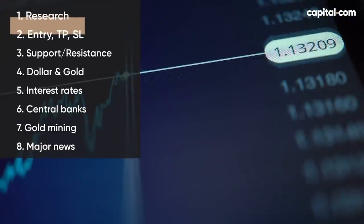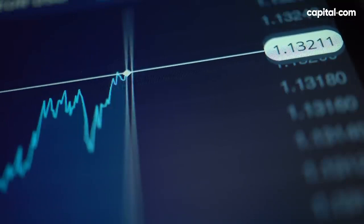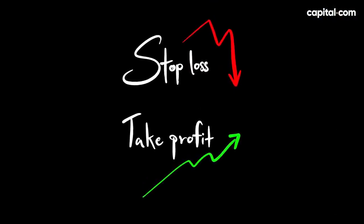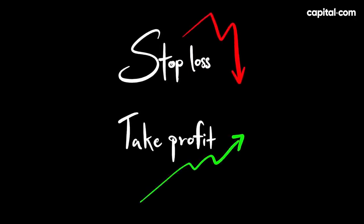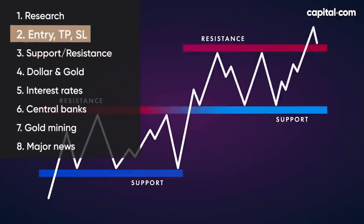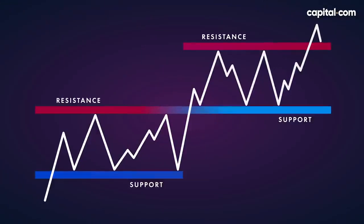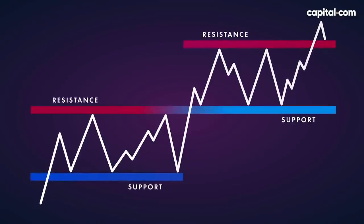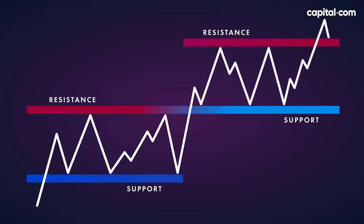The second part of planning the trade is determining the three different price levels for the trade. Number one is finding the price at which you're willing to open the position. Number two is the level at which you're thinking of taking profits. And number three is a level to set your stop losses. Always have these set in advance to manage the risk of your trade. To help determine these three levels, you can identify the nearest support and resistance levels, looking at historical lows and highs, or using trading indicators such as Fibonacci retracements or moving averages.